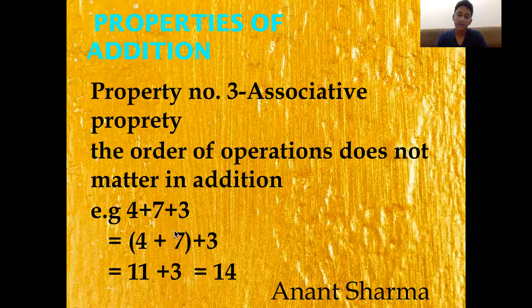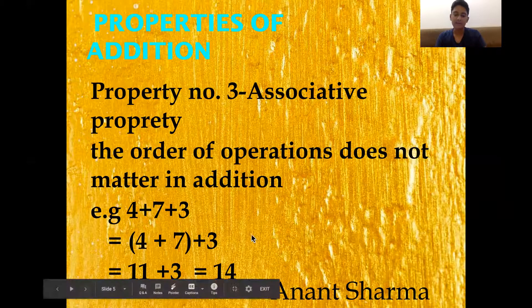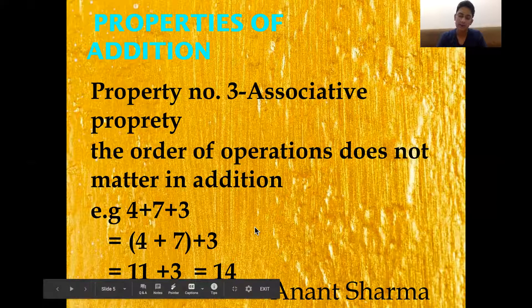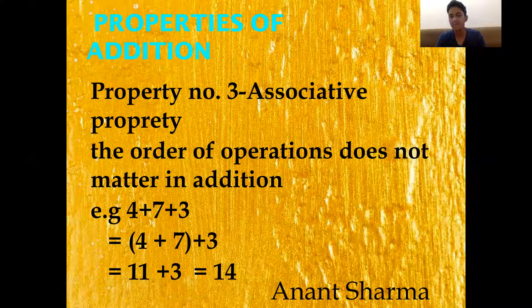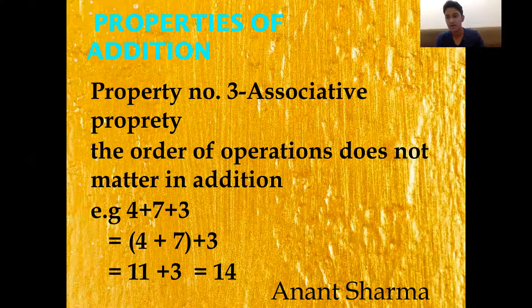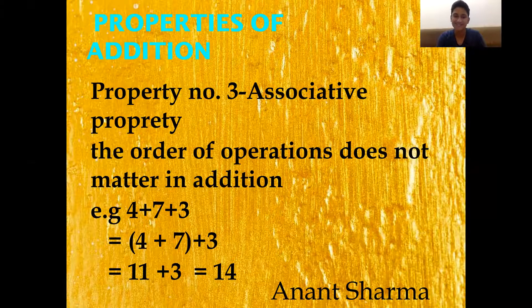If we had selected 7 and 3 instead, we would write 4 + (7 + 3). Using BODMAS, 7 plus 3 equals 10, and then 4 plus 10 equals 14 — the same answer.